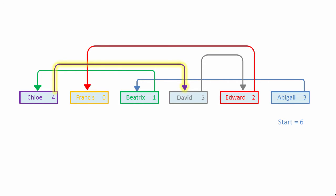David, in turn, points to item 5, Edward, and item 5, Edward, points to item 2, which is Francis. Francis' next pointer is set to 0, which means Francis is the last item in the list.